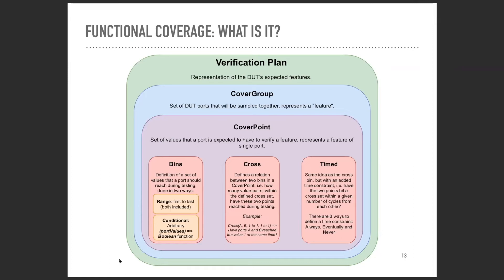Then we have cross points, which is the same as the cross relation in SystemVerilog. This allows us to define the coverage relation between multiple different ports. We have a list of ranges, each associated to a port, and a hit is considered when each of the ranges gets a singular hit. And then we have timed cross, which is the same idea but with an added timing delay. This allows us to test the timing of our DUT.